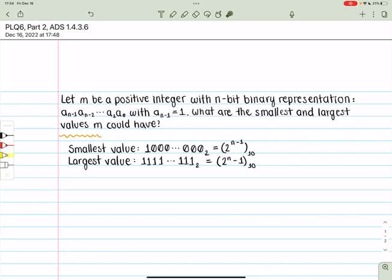So, the smallest value that m could have would be the 1, the a_(n-1), with the 1-bit at the front, with everything else being a 0. And we know that's the smallest because if any of these were 1s, then it'd be slightly bigger. So, considering that all of these rest of the numbers are 0s, we have 2 to the n-1, and that's the only on-bit there.